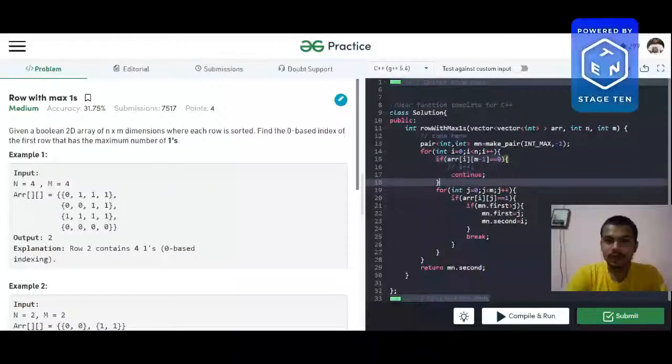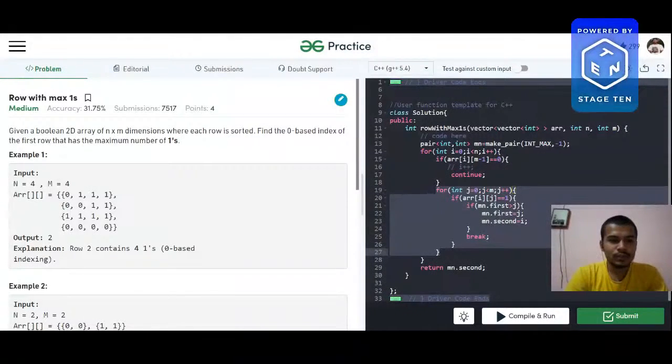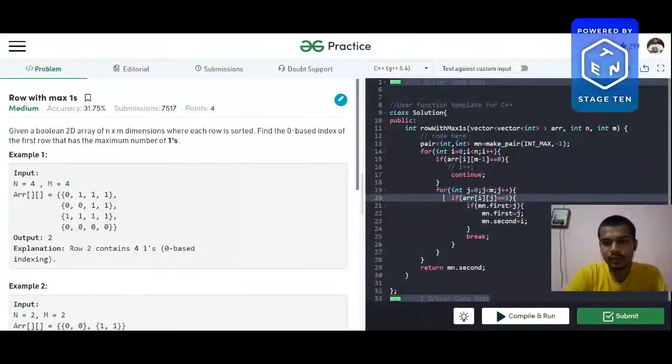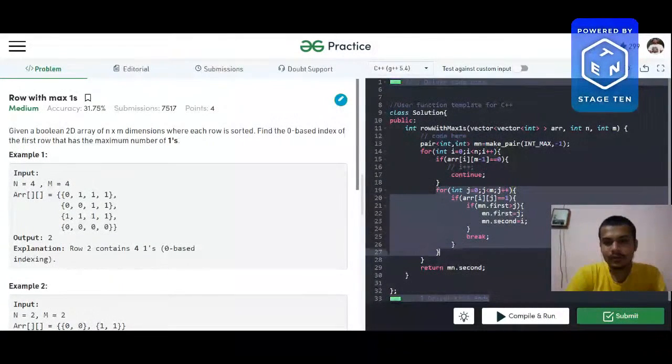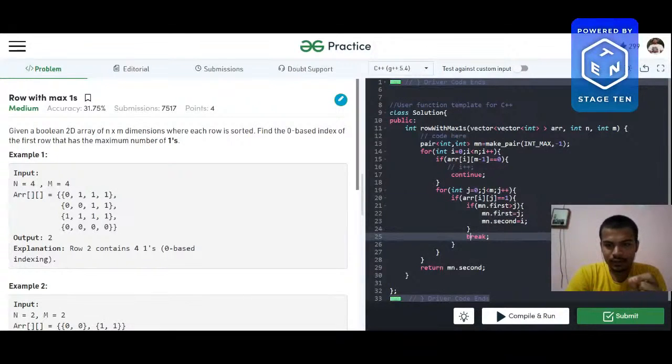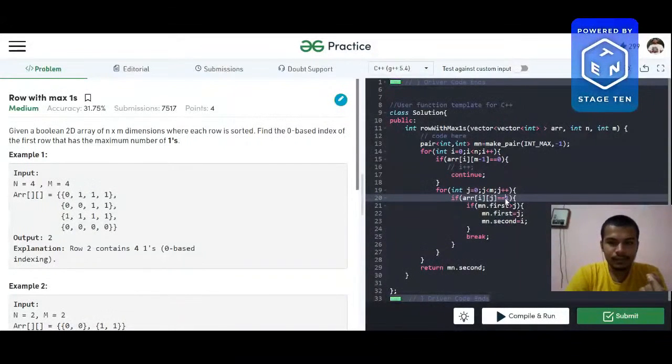And this for loop goes from zero to m, column index number zero to column index m. So it is traversing column by column.